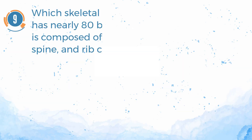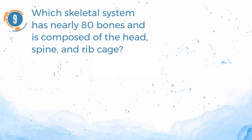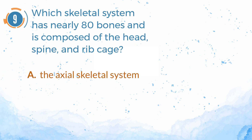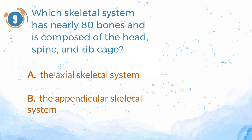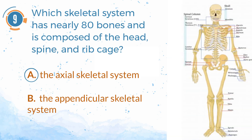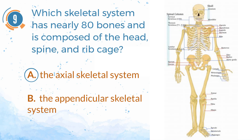Number 9. Which skeletal system has nearly 80 bones and is composed of the head, spine, and ribcage? A. The axial skeletal system. The answer is A — the axial skeletal system. The axial skeletal system has nearly 80 bones and is composed of the head, spine, and ribcage. The appendicular system is incorrect because it contains the appendages, the shoulders, and the hip complex, and has more than 120 bones.